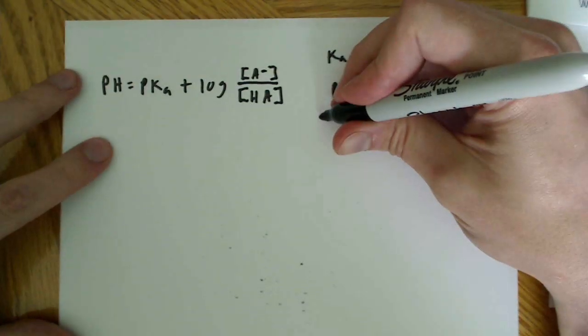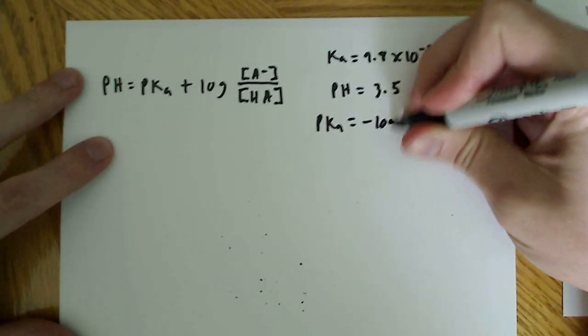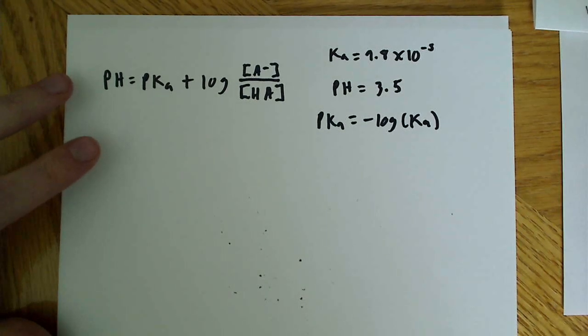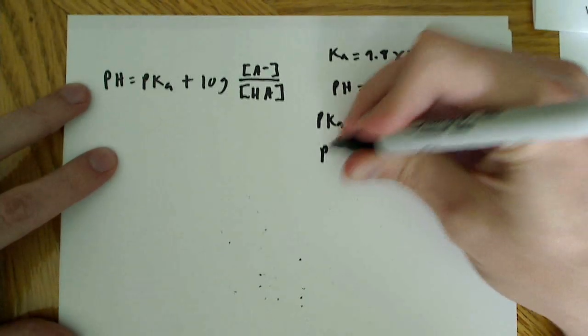And the first thing we want to do is find the pKa. So, there's an equation that says the pKa is equal to the negative log of the Ka. We have the Ka, all we have to do is plug in.